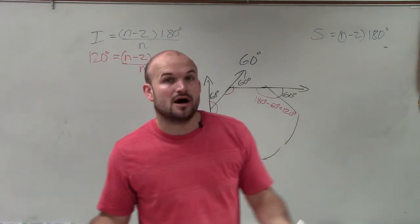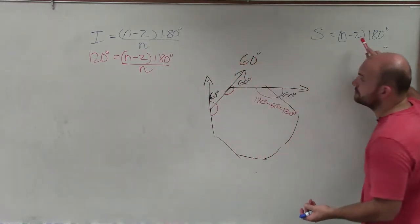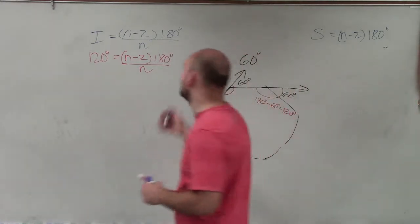Now, what they're asking us is to find the sum. And to find the sum, I need to know the number of sides. So I've got to solve for n. So to do that, I'll multiply by n on both sides.